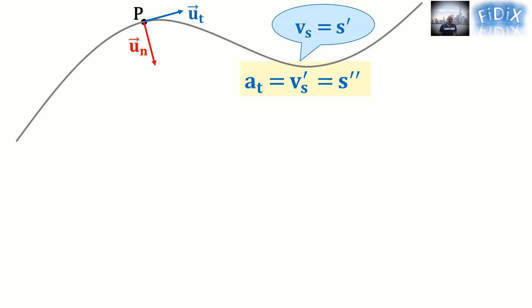since v_s is the derivative of s. a_n is equal to v_s squared over R.